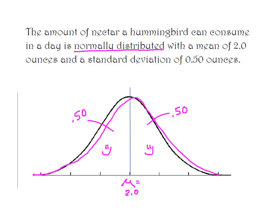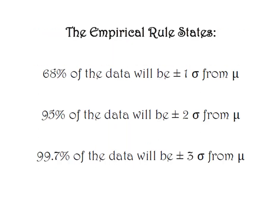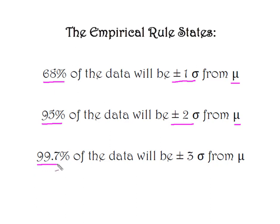Let's take a look at how we apply the empirical rule to make some decisions and draw some conclusions about the distribution of our data. The empirical rule states that 68% of the data will be contained in an interval created when we move plus or minus one standard deviation from the mean. It also tells us that 95% of our data will be located in an interval created when we move plus or minus two standard deviations from the mean. And lastly, 99.7% of the data will be contained in an interval created when we move plus or minus three standard deviations from the mean.